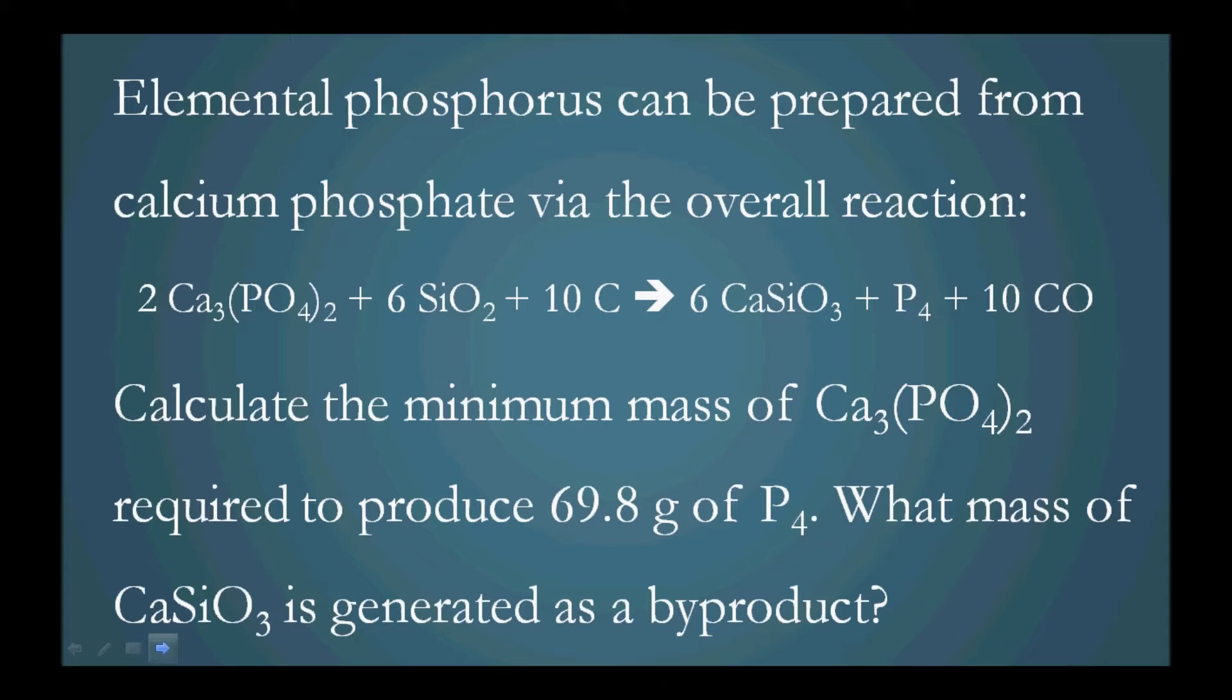Calculate the minimum mass of Ca3(PO4)2 required to produce 69.8 grams of P4. What mass of CaSiO3 is generated as a byproduct?